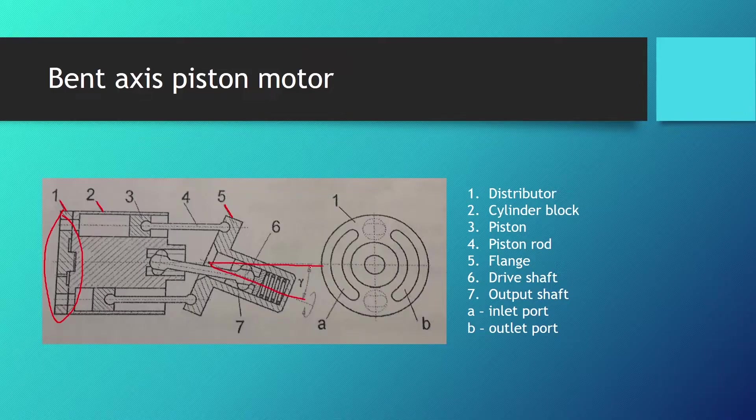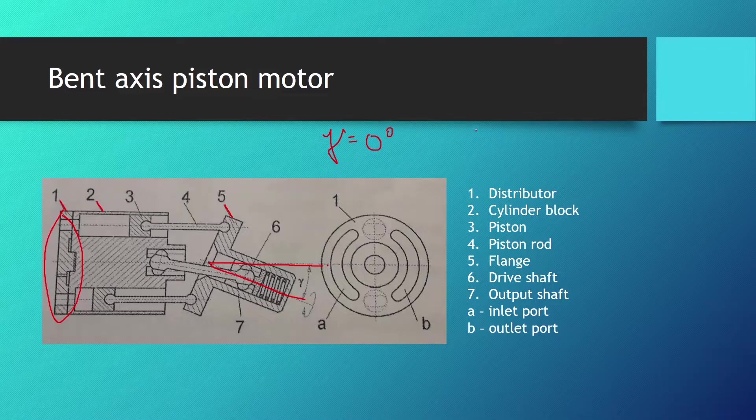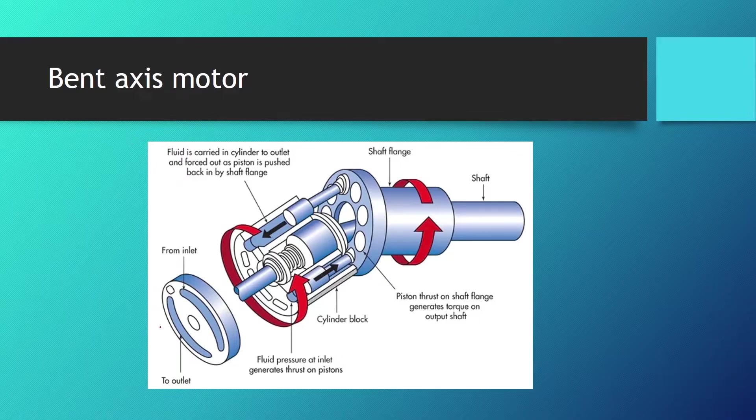This angle right here is the angle with which we can adjust the displacement of the motor. The maximum displacement for this motor is a certain angle gamma. If the bent axis motor has the value of gamma zero, so zero degrees, if it sits in line with the cylinder block, displacement is zero. When the angle gamma is at a maximum point we have the maximum torque for this axial motor.